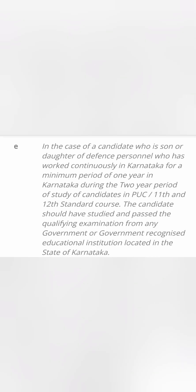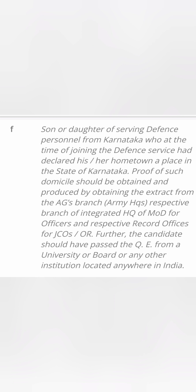Clause E is for the son or daughter of defense personnel who have continuously worked in Karnataka for a minimum period of one year during the last two years — that is, during the child's class 11th or 12th. They should have stayed and worked in Karnataka for minimum one year, and the student should have passed the qualifying exam in a government or government-recognized educational institute in Karnataka.